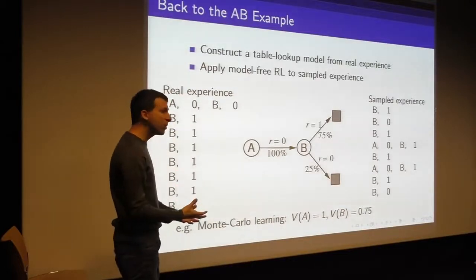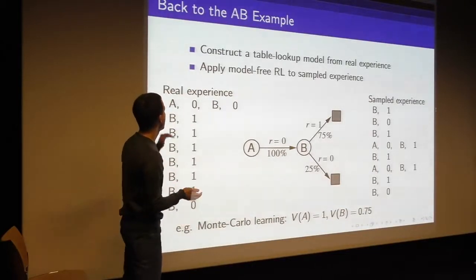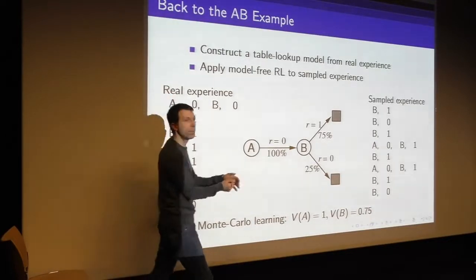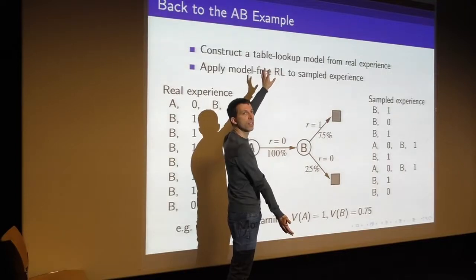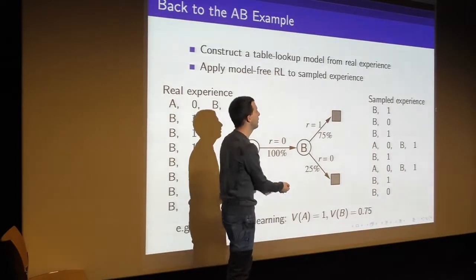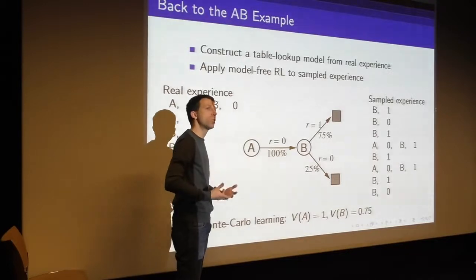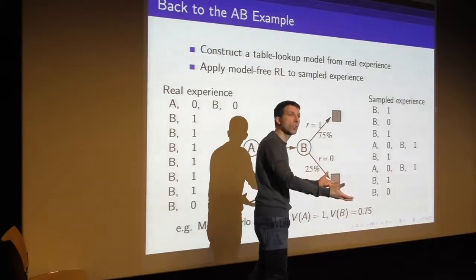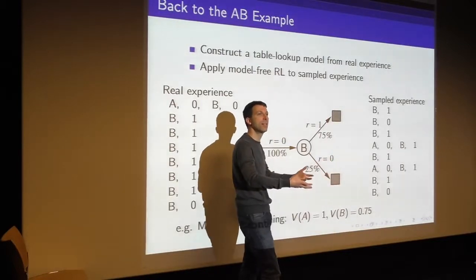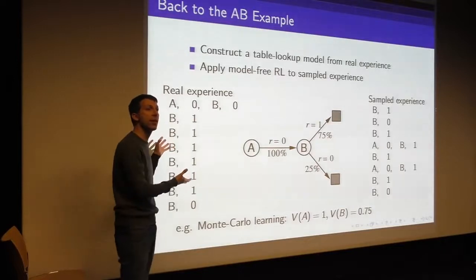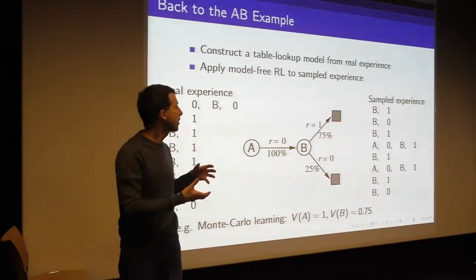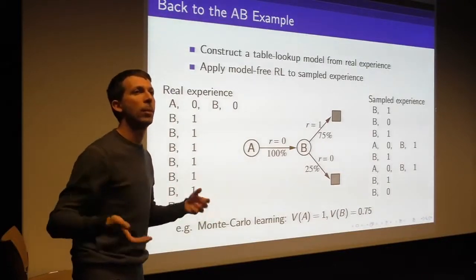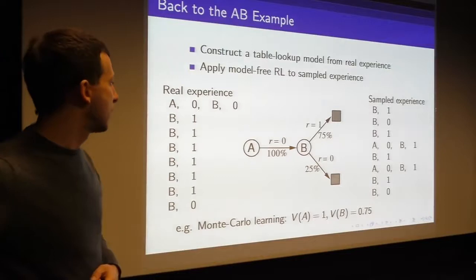It should be clear that the advantage of this approach is that even though we've only seen a limited number of real trajectories, we're able to sample as many trajectories as we can given our computational budget. If you've got a real robot, it's quite slow and painful to work with. But if it builds a model and imagines what might happen, it might be able to sample millions of trajectories of hypothetical experience, even though it might only have seen one or two trajectories of real experience. Once we have that model, we essentially have the ability to generate infinite data.